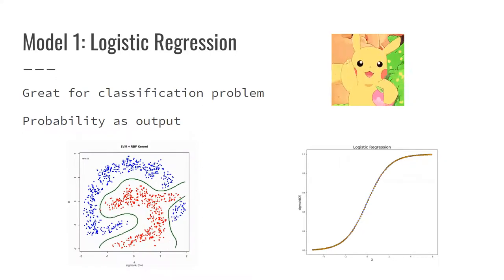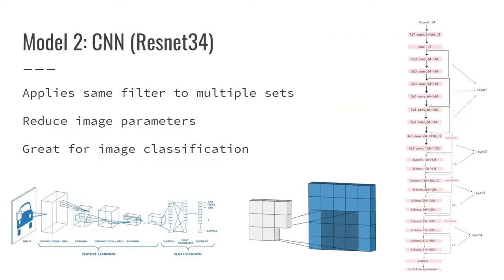First, we are going to use logistic regression, which is great for classification problems. For this model, we are also using CNN, or convolutional neural network. We are using ResNet-34 deep learning model for this one.